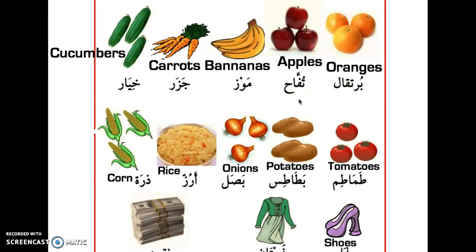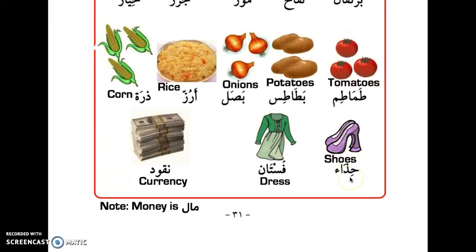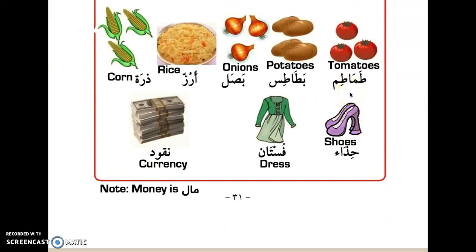Now let's go through the marketplace vocabulary words: برتقال (orange), تفاح (apple), موز (banana), جزر (carrots), خيار (cucumber), طماطم (tomatoes), بطاطس (potatoes), بصل (onion), أرز (rice), ذرة (corn), حذاء (shoe), فستان (dress), نقود (currency/cash).